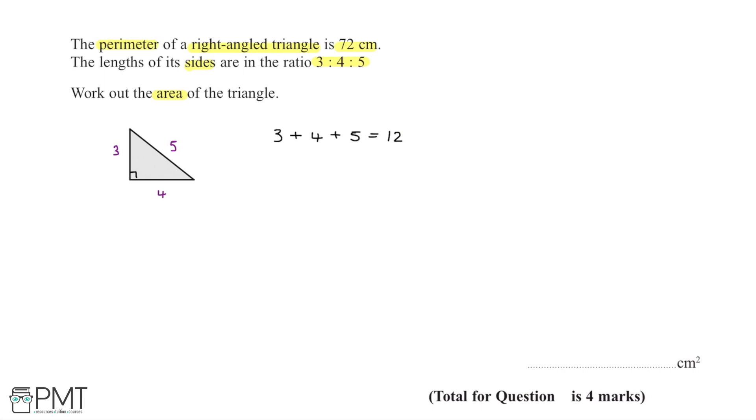Taking 72, the actual perimeter, and dividing it by 12 shows how much each side length needs to be scaled up by to reach a perimeter of 72cm. This gives an answer of 6.